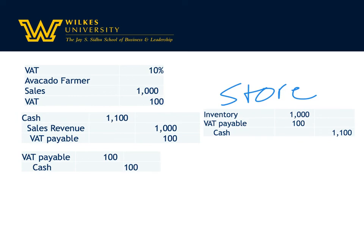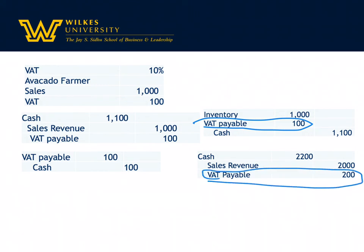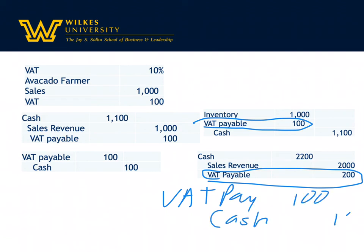Then when the grocery store sells — they have a markup, so let's say an extra $1,000 — they receive $2,200 from the end consumer. Of that, sales revenue is $2,000 and VAT payable is still 10%, so it's $200. What's interesting is when they go to pay, they're only going to pay the government $100, because they had the $200 on their records less the $100 they paid the farmer. Their net difference is only $100, so they debit VAT payable for $200 and cash for $100. And that's how you handle value-added tax.